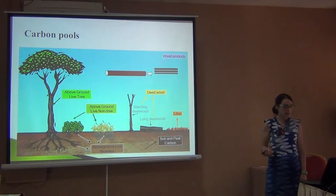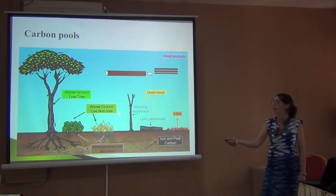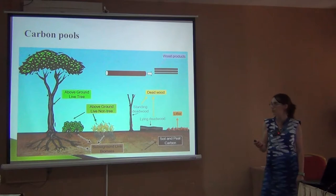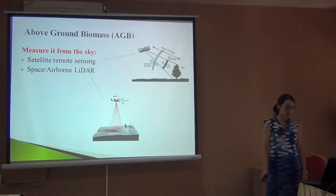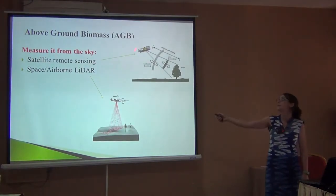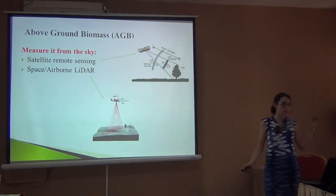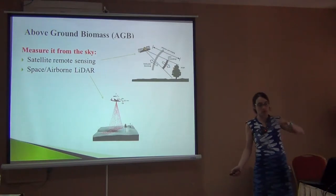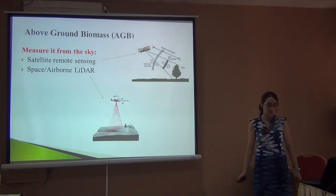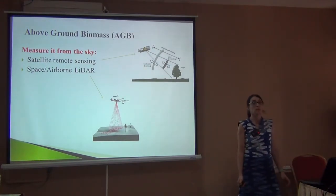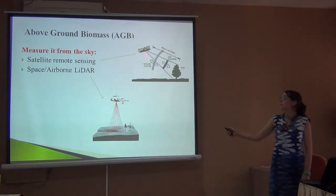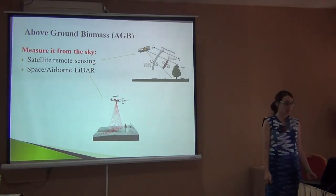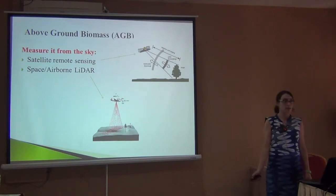We start talking about how to measure above-ground biomass — mostly the trees. AGB can be trees, bushes, and other vegetation above the ground. We can measure it from the sky using two things: remote sensing, like images from satellites, or using space or airborne LiDAR.